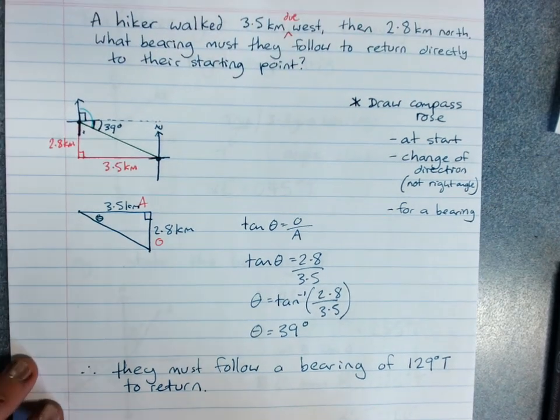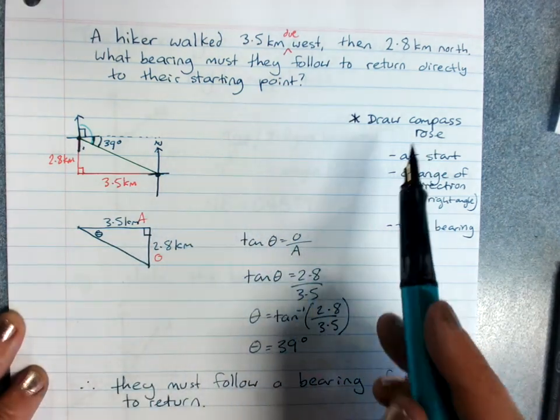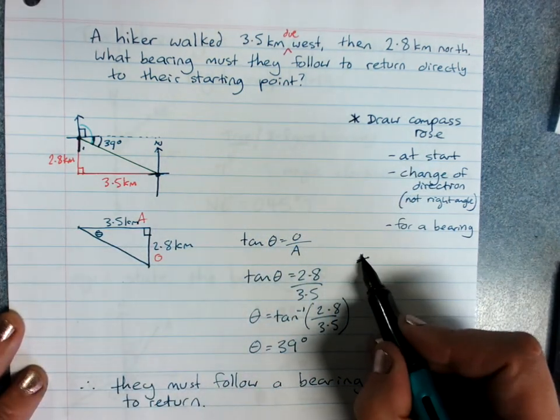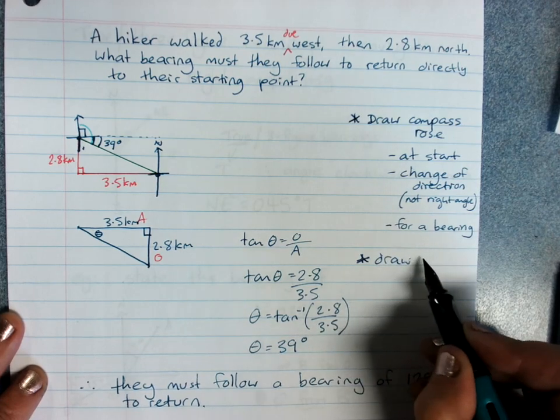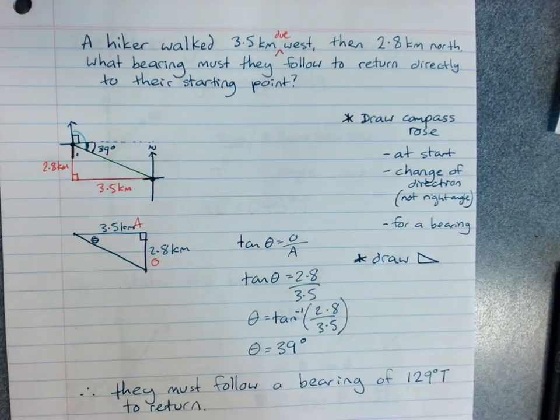The questions are all going to be different sorts of things. But if you follow those steps, draw a compass rose, draw the individual triangles, and work out what you're after, you should be okay.